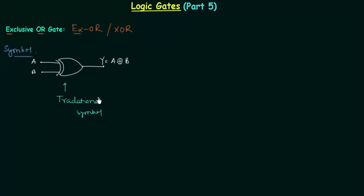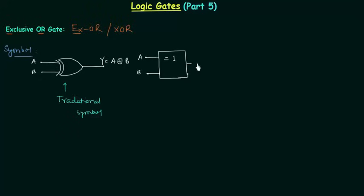We also have the IEEE symbol for the XOR gate. To draw it, we make a square and write '=1' inside. The two inputs are A and B, and the output is Y. This is the IEEE symbol for the XOR gate.